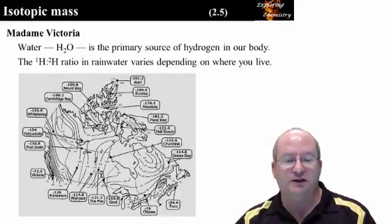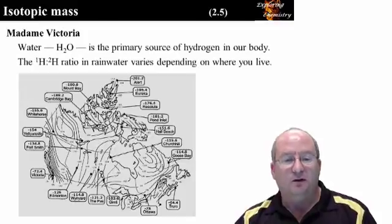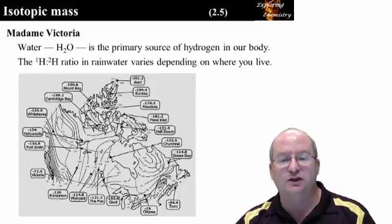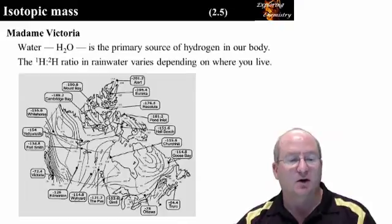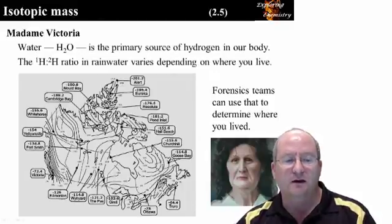So what good is this information? Well, forensics teams can use this information to determine where you lived. Plants and animals that grow in a region use rainwater to grow. They incorporate this hydrogen to deuterium deviation into their plant and animal structures. When we drink local water and eat local plants and animals, we incorporate this hydrogen to deuterium ratio into our bodies.